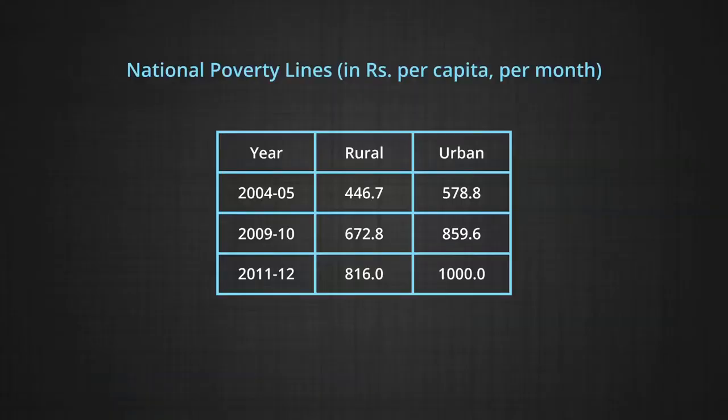These 5 non-food items are clothing, footwear, durable goods, education and institutional medical expenses — called Mixed Reference or Recall Period, that is MRP. The Tendulkar committee estimated that the all-India poverty line for 2004-05 for rural areas was Rs. 446.70 per capita per month and for urban areas Rs. 578.80 per capita per month.